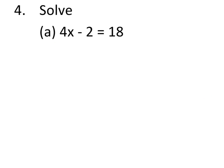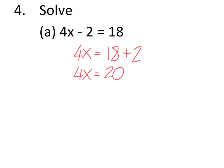Question 4a in the non-calculator is solving a straightforward equation: 4x take away 2 equals 18. First we move the negative 2 to the other side — it changes to plus 2, giving us 4x equals 18 add 2, which is 20. Then we move the 4 to the other side; since it's multiplying x, it will divide, giving 20 over 4. 20 divided by 4 equals 5, so x equals 5.